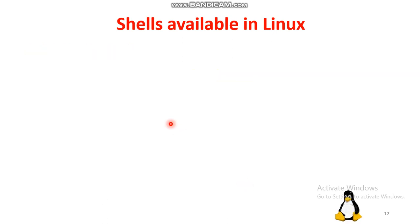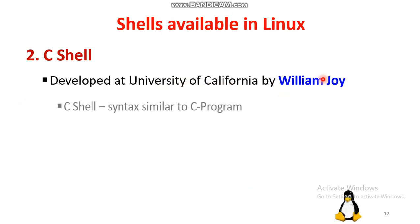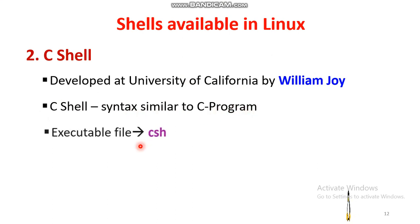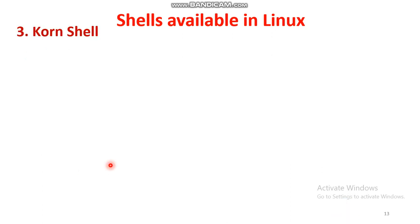The C shell was developed at the University of California by William Joy. It has syntax similar to the C programming language, with the executable file notation 'csh'. It is also one of the most widely used shells.